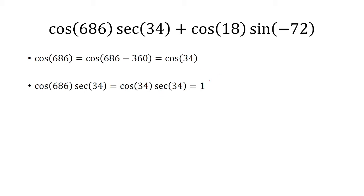And we know that secant is a reciprocal of cosine. So this is really cosine 34 times 1 over cosine 34. And so the cosine 34 is cancelled, and we're left with 1.